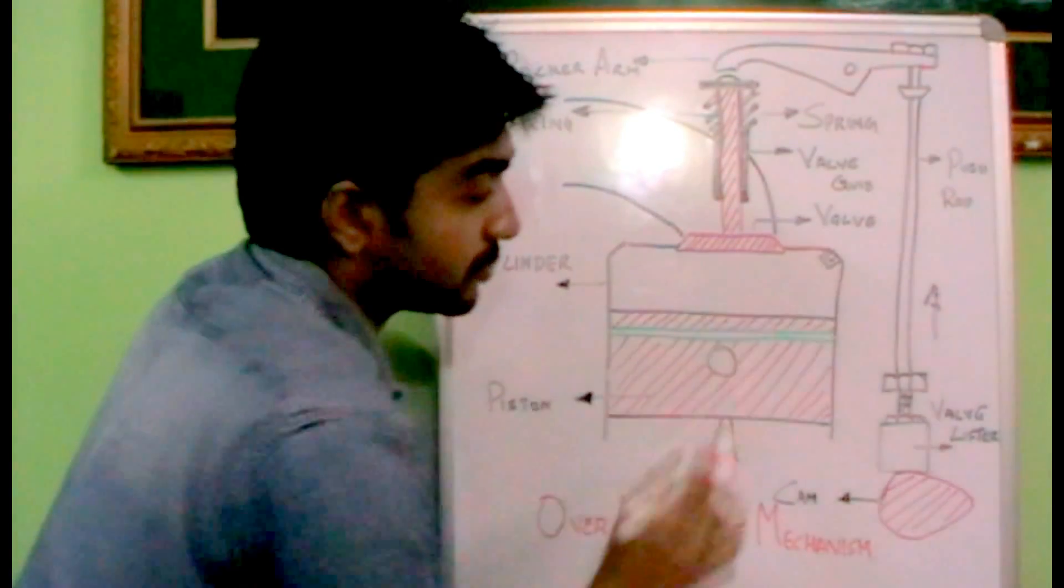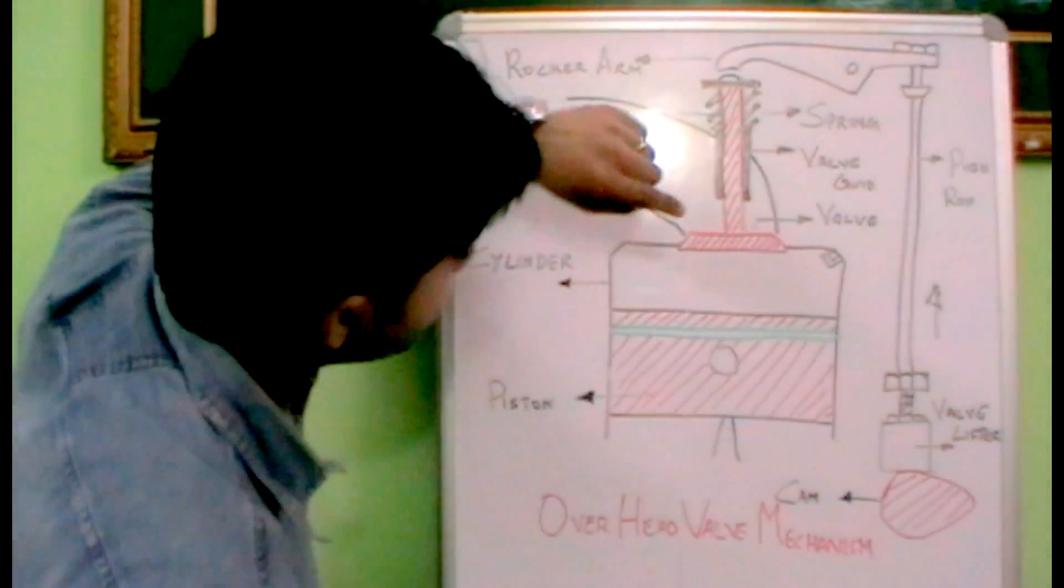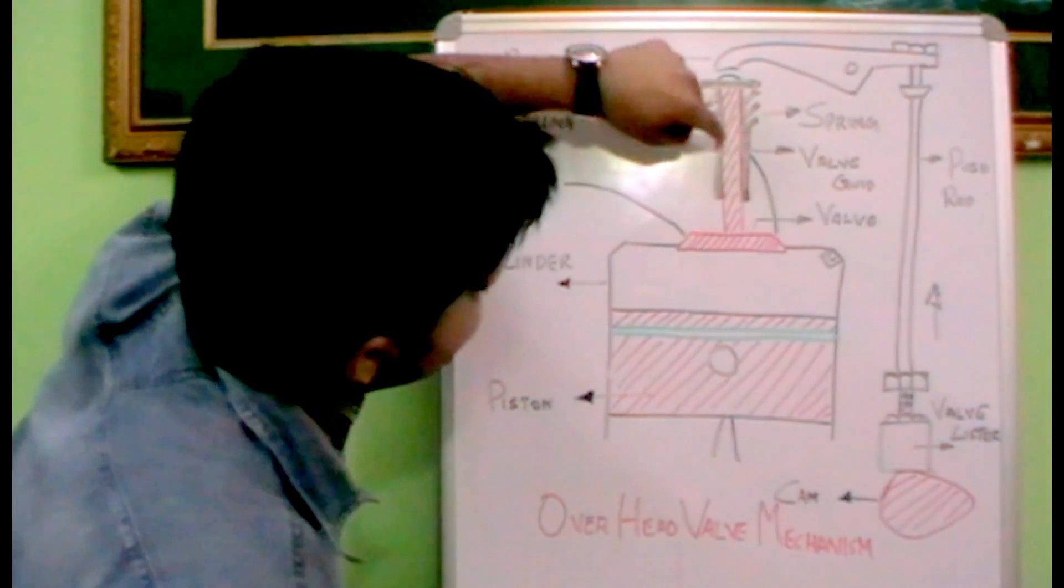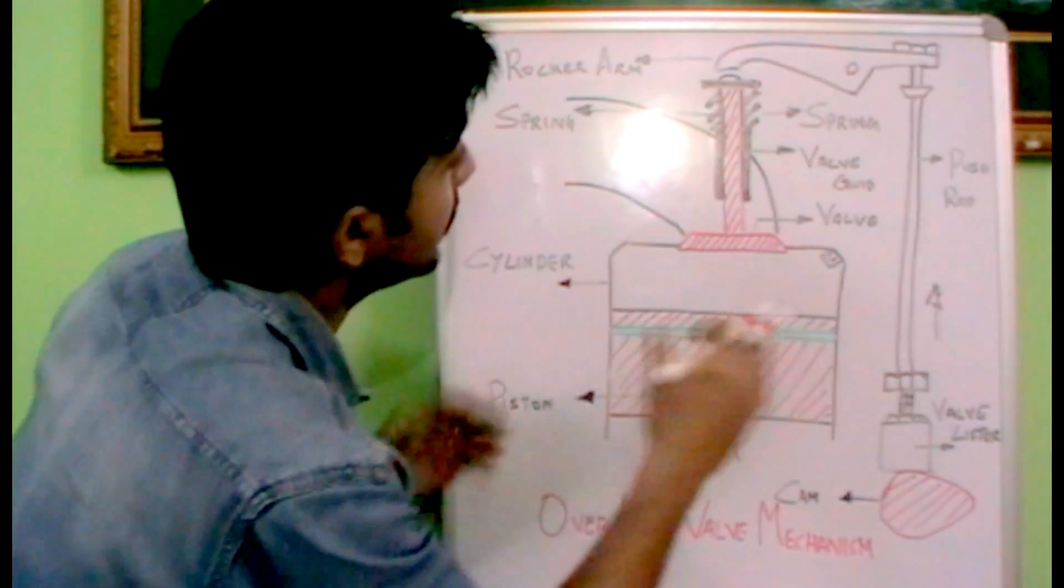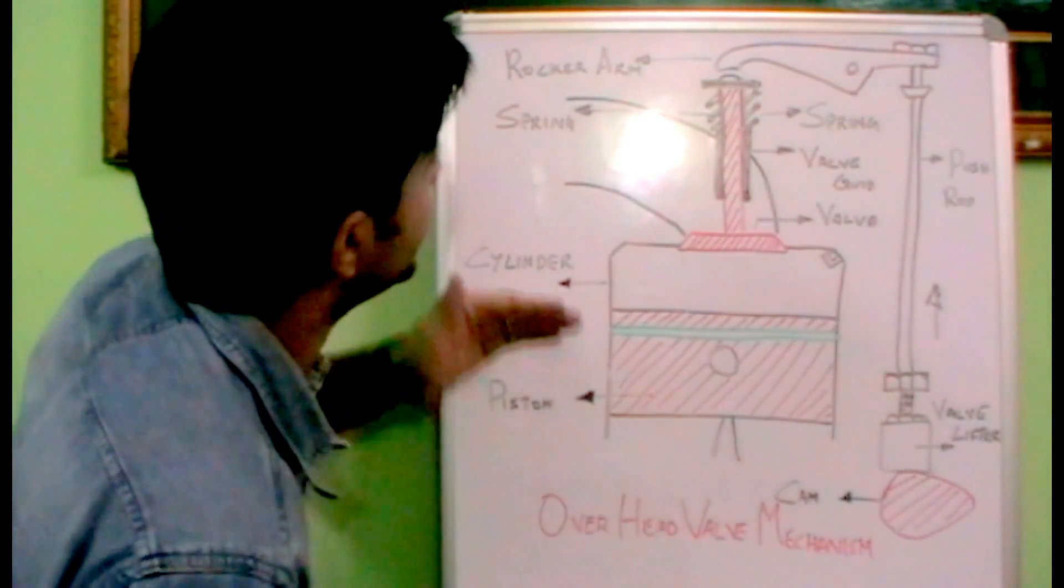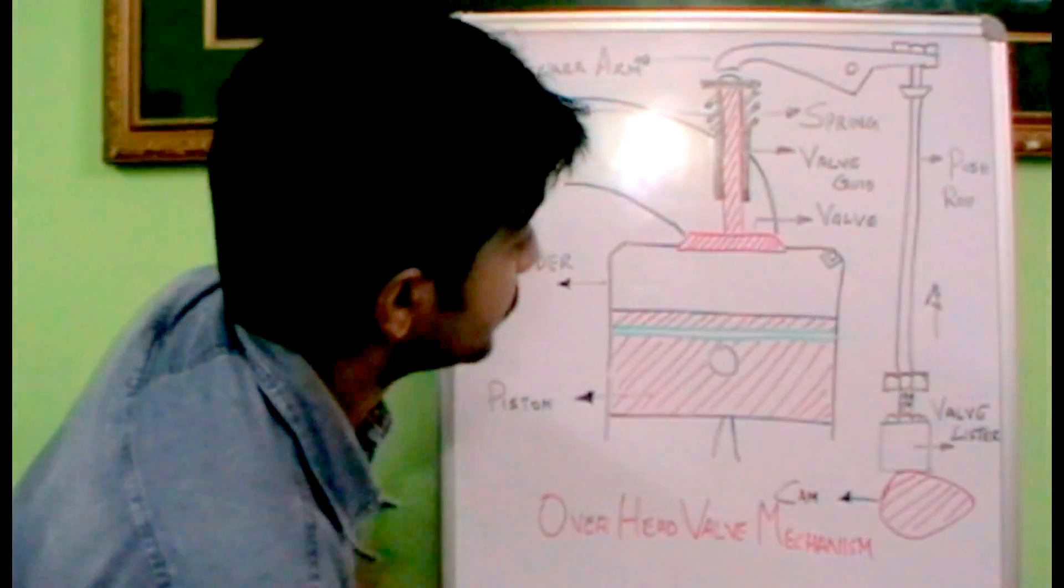And here we have the spark rod. So in an overhead valve mechanism, you can see the valve is arranged at the center of the cylinder. And it works. So it has been activated by the help of these four controls.